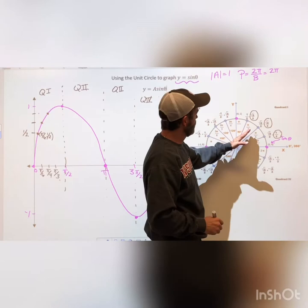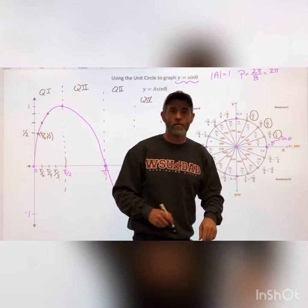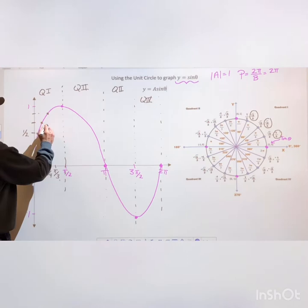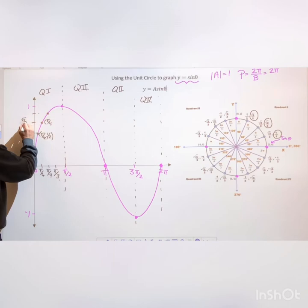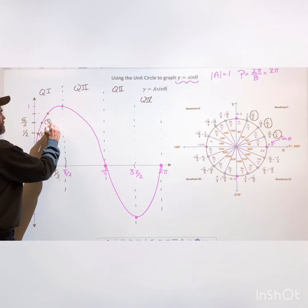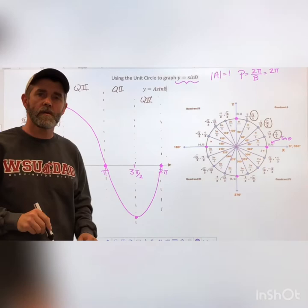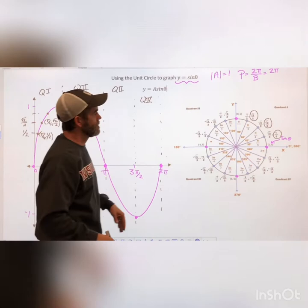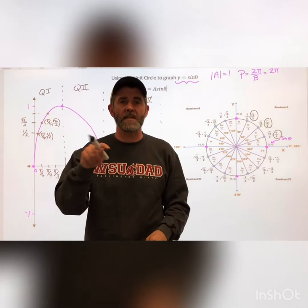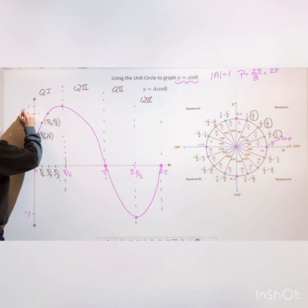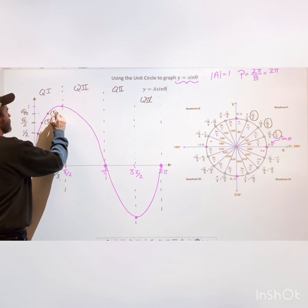At 45°, the sine value is √2/2, which is roughly 0.707 — so at 45° (which is π/4), that coordinate is (π/4, √2/2). You can see it's higher than 0.5, which makes sense. At 60°, the sine value is √3/2, roughly 0.866 — higher than the previous one, but slightly less than one. That coordinate would be (π/3, √3/2).